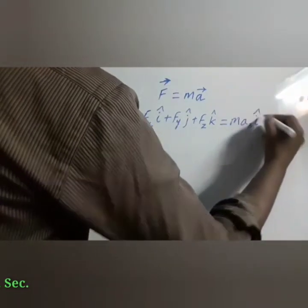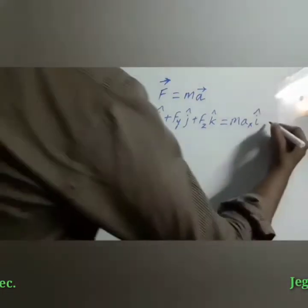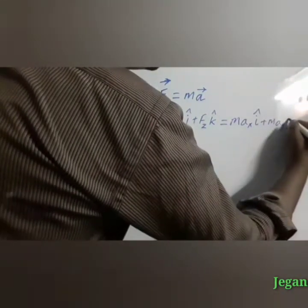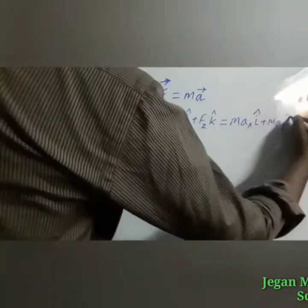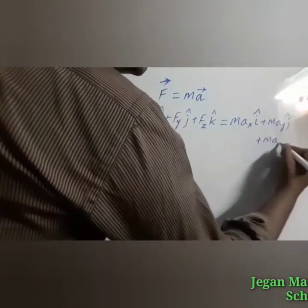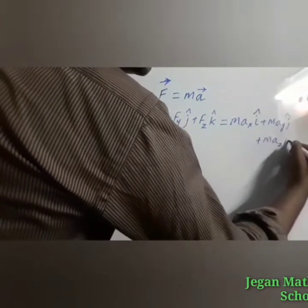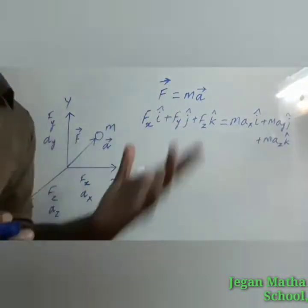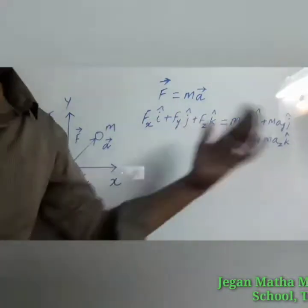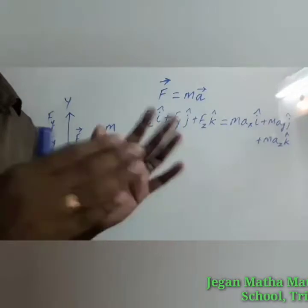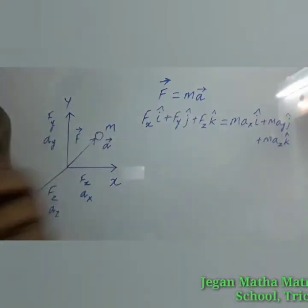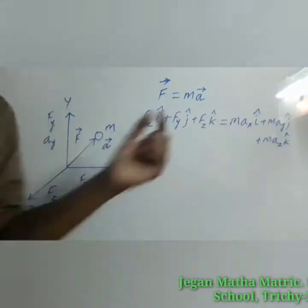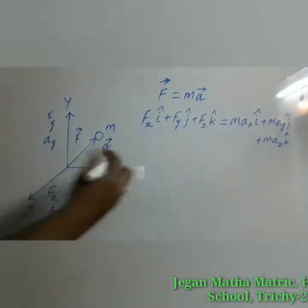So we write m·ax·i-cap plus m·ay·j-cap plus m·az·k-cap, where m is a common factor that can be taken outside. By comparing both sides we can write three scalar equations — we compare the coefficient of i-cap and can write the equations.